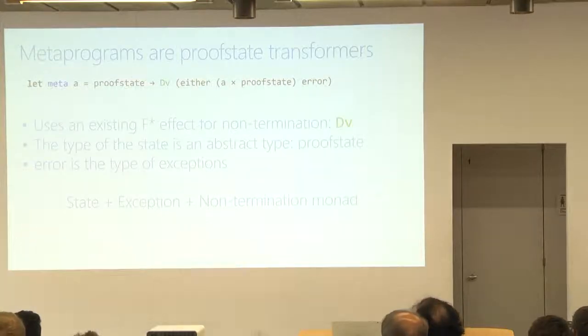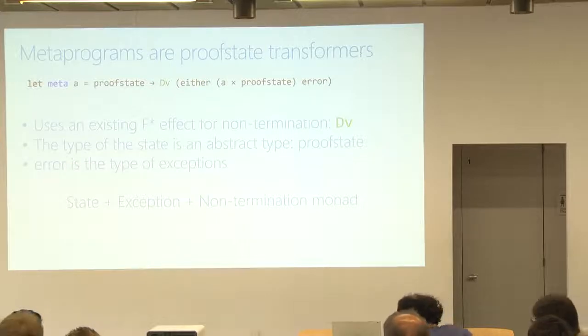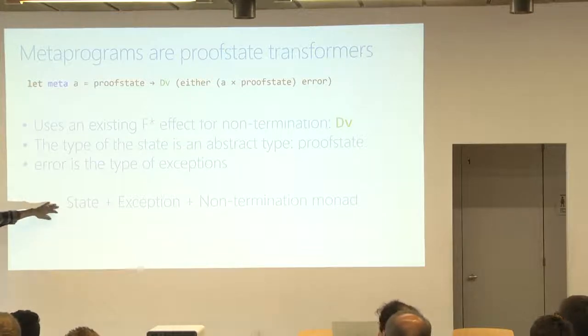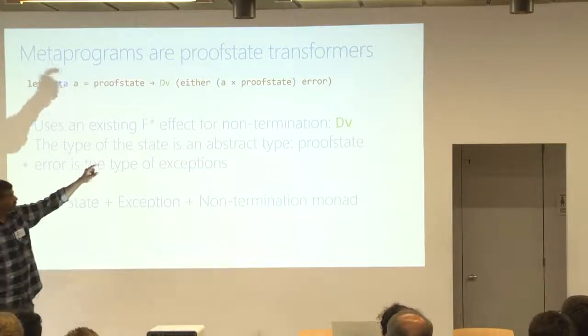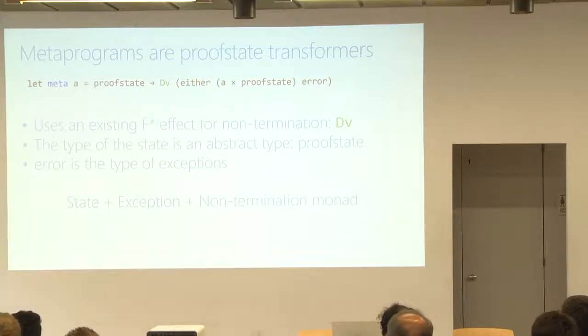So, since F-star is extensible with effects, what we can do is to say, okay, I'm going to define a new effect in F-star of meta programs. And a meta program is a program that is a combination of state, where the state is a proof state. Exceptions, because the program can either return successfully with a result in a final proof state or an error. And non-termination, that's the DV there. Programs can, meta programs don't need to terminate. We shouldn't be forced to prove them terminating.